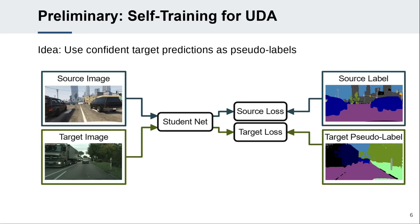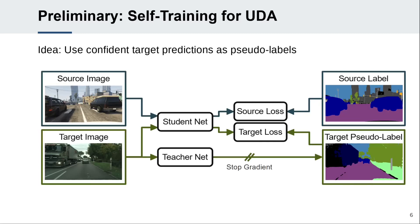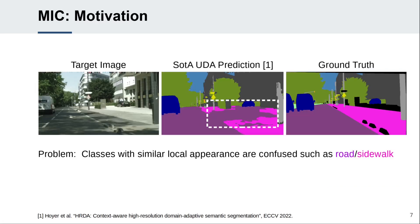One common approach is self-training. Here, the network is trained using ground truth labels for source images and pseudolabels for target images. The pseudolabels are generated by taking confident predictions of a teacher. The teacher is an exponential moving average of the student for temporally stable predictions. In that way, the networks are iteratively adapted to the target domain. However, even recent UDA methods struggle to distinguish target domain classes with similar local appearance, such as road and sidewalk, as there is no ground truth supervision available to learn the slight appearance differences on the target domain.